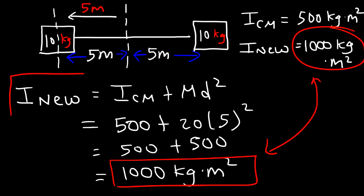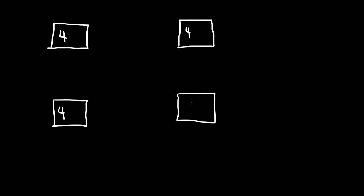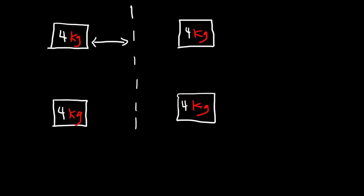Now you know how to use the parallel axis theorem to calculate the new inertia of a system. Let's try another example — this time a system with four masses as opposed to two. Each block has a mass of 4 kilograms. Calculate the inertia of the system first when the axis of rotation passes through the center of mass, where all four blocks are equally distant — 5 meters — from the axis of rotation.